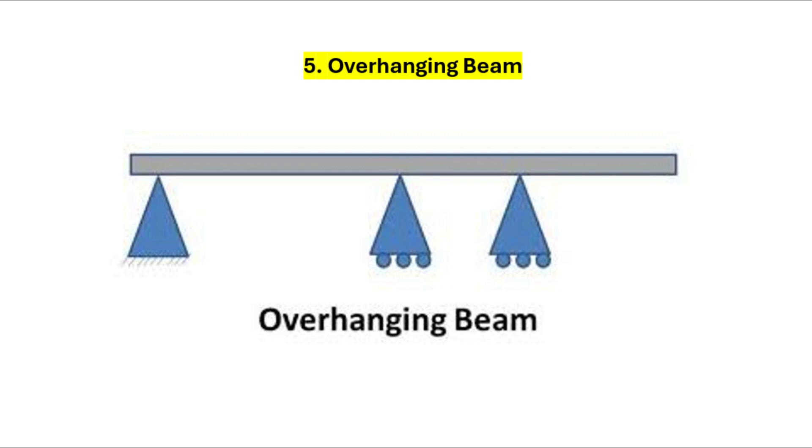5. Overhanging beam. Part of this beam extends beyond its support, creating an overhang. It's often seen in structures like balconies or theater stages.